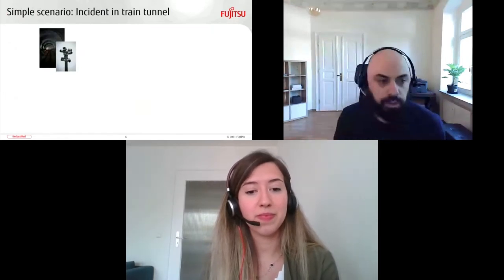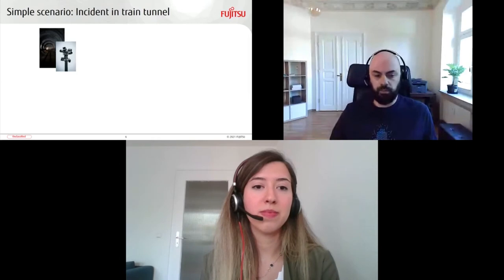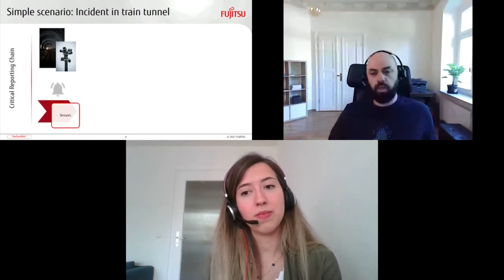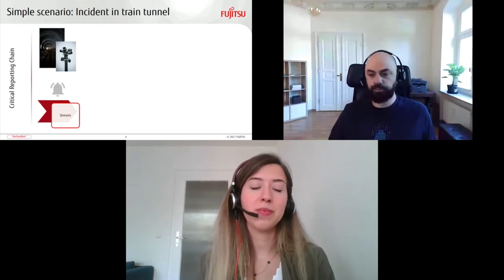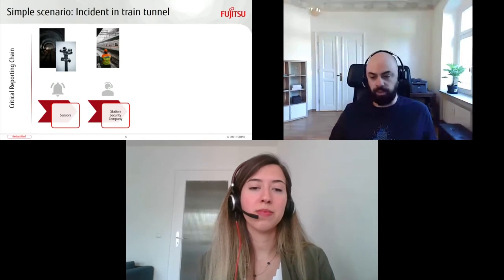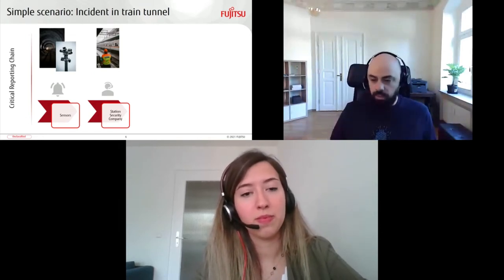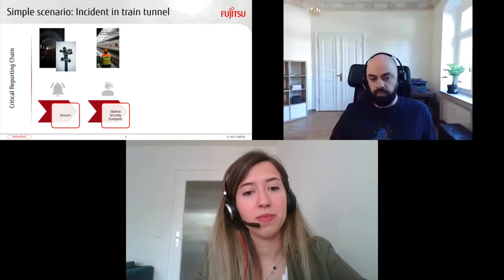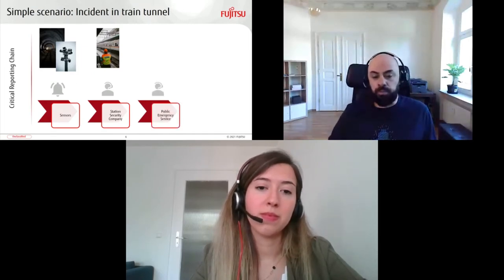Based on what Adia just described, let us consider a simple scenario: an incident taking place in a train tunnel in the subway, close to a subway station. This tunnel is monitored by devices that raise the alarm, and after this we have a process of different stakeholders involved at different stages. The first could be the local security department in the station, who need to start taking action — send security personnel to check the situation, evaluate it, report back, and make a decision. If it's something critical, it needs to be escalated to the next stakeholder, which in our scenario could be a public emergency service.